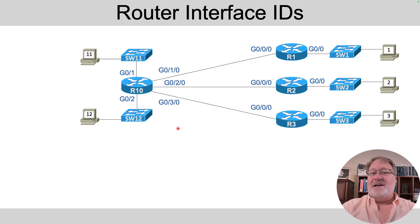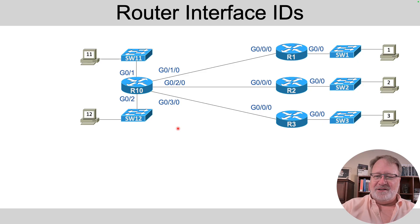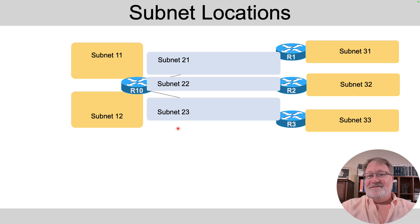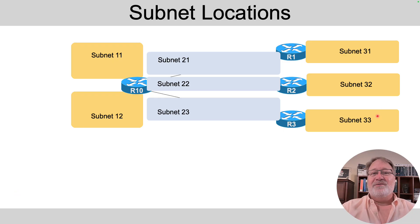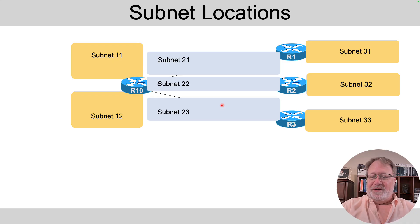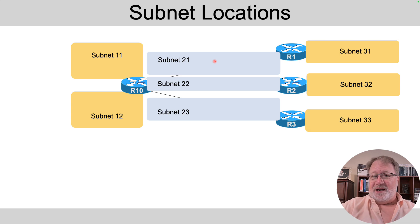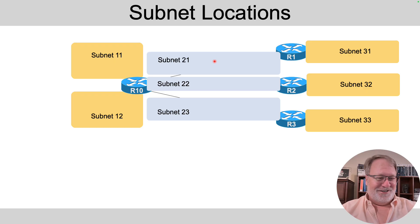I've also written this exercise up as a blog post — it's linked in the show description — so you can see figures like the topology diagram statically, which may be helpful as you work through the lab. Here are the locations for the subnets: we need two subnets on the far left for the two central-site LANs, three on the far right for the branch office LANs, and three for the WAN links in the middle. I've pre-labeled them with generic names — subnet 11, subnet 12, and so on — so the instructions can tell you rules to pick the same subnet IDs I pick, making it easier to compare answers.